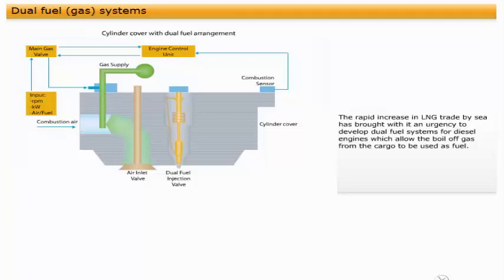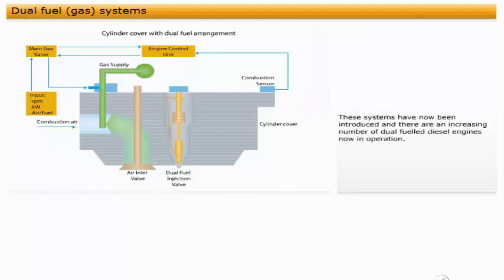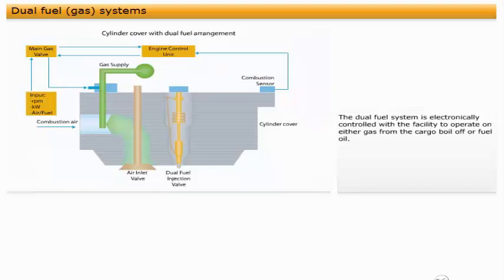The rapid increase in LNG trade by sea has brought with it an urgency to develop dual fuel systems for diesel engines, which allow the boil-off gas from the cargo to be used as fuel. These systems have now been introduced, and there are an increasing number of dual-fuelled diesel engines now in operation. The dual-fuel system is electronically controlled, with the facility to operate on either gas from the cargo boil-off or fuel oil.